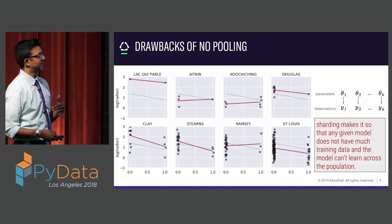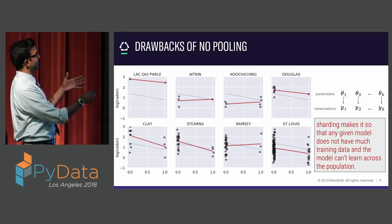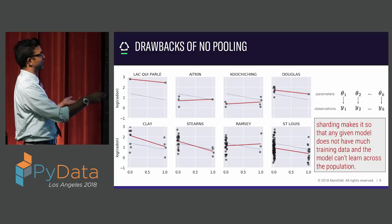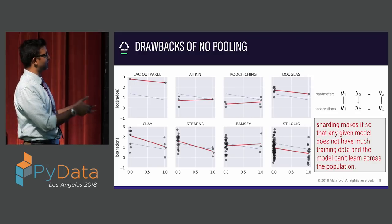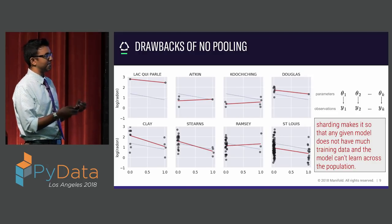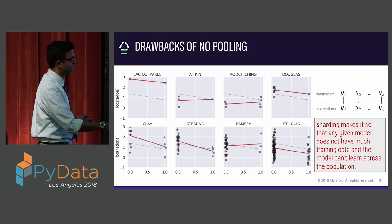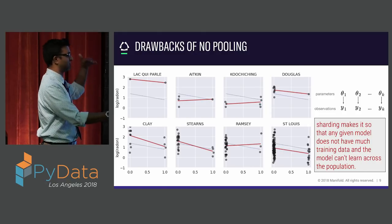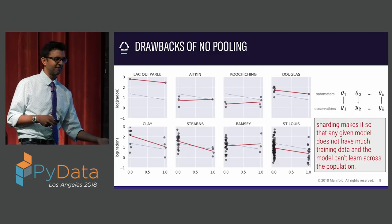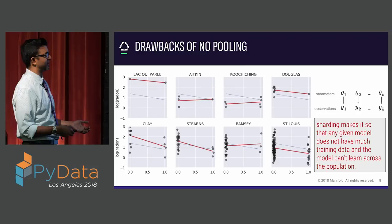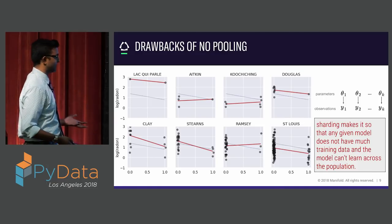The alternative is to learn a separate model per county — shard the data and learn a linear model for each. But in places where I don't have very much data, I'm learning models that may be nonsensical — I'm overfitting. For example, in Ramsey County, the radon level is going up as you go higher from basement to first floor, which is typically not the case; there is a very strong prior that radon levels are higher in the basement. So when you shard the data and learn an independent parameter per cluster, the models can become very, very noisy.